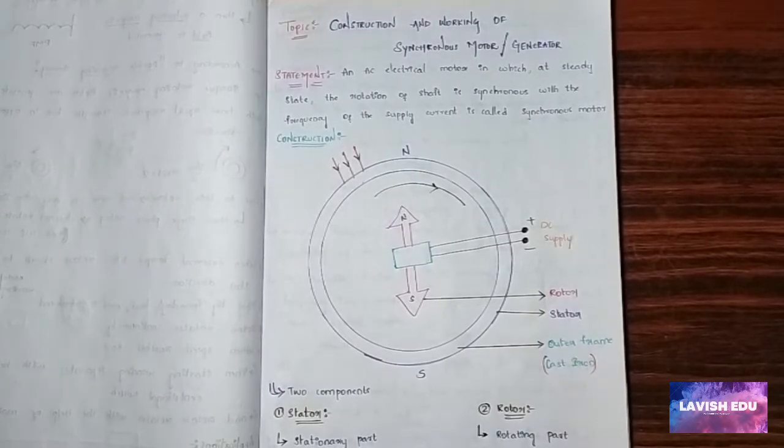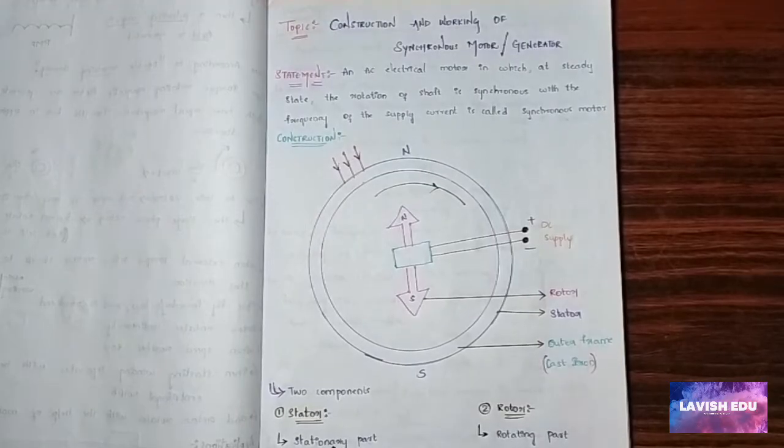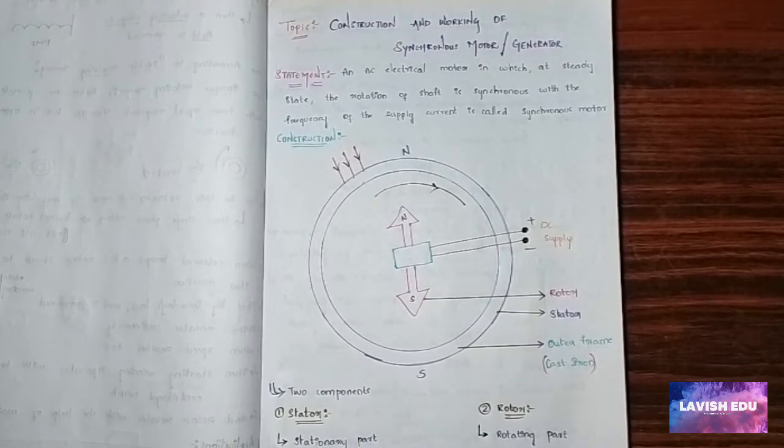Let's see briefly about the stator and the rotor. Stator is the stationary part and the rotor is the rotating part. The stator is laminated. Why do we laminate? We laminate to reduce eddy currents. Very good. It has field windings made up of copper in the rotor.